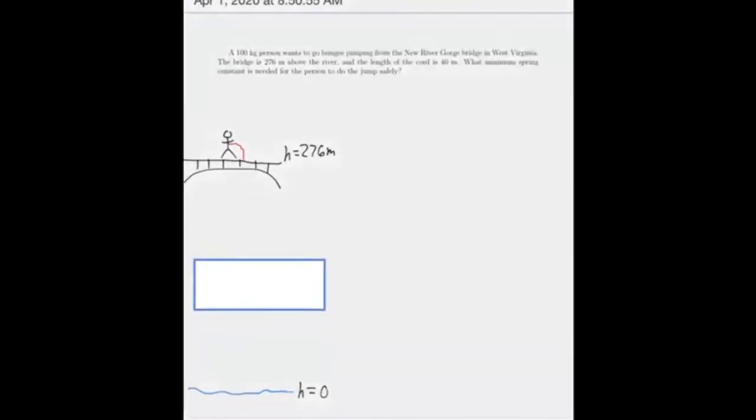So what we're going to want to look at, our point one is where the person is first jumping, right from there. And then point two, well, if I'm just going to barely have a successful bungee jump, that means that the person is going to make it all the way down basically just till they reach the level of the water before they turn around. So point two is going to be down at the water, right?